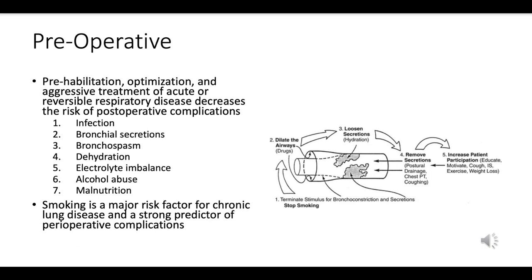Excessive bronchial secretions can block airways and impair gas exchange; physiotherapy, mucolytics, and hydration can help in clearing these secretions. Bronchospasm — constriction of the airways — can reduce airflow and lead to respiratory distress. Bronchodilators can be used preoperatively to reduce bronchospasm in patients with conditions like asthma.